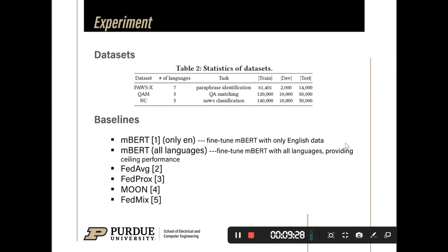Then, I will show the experiment results. We use three public multilingual datasets: PAWSX, QAM, and QC. For the first dataset, it is about the task paraphrase identification.